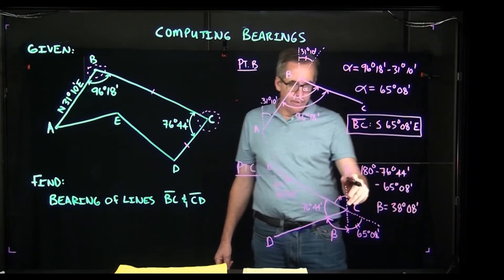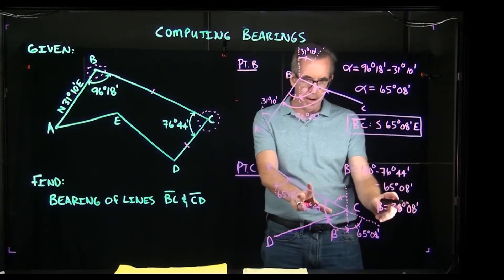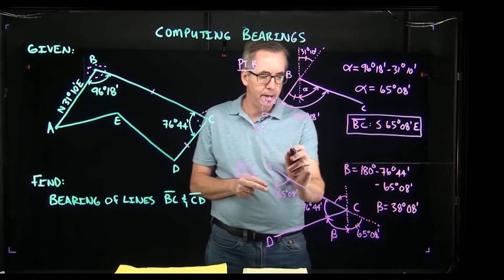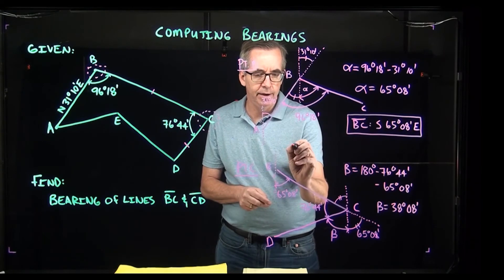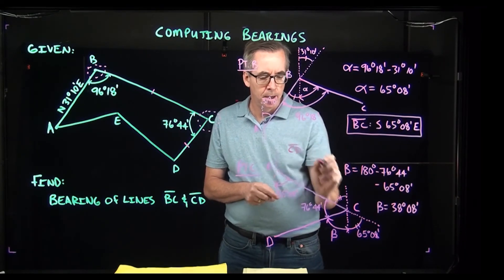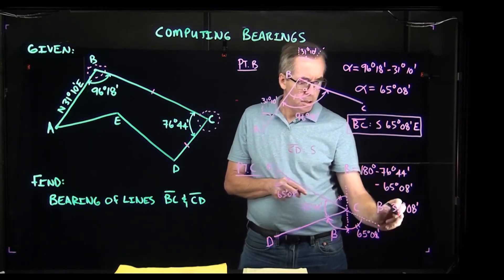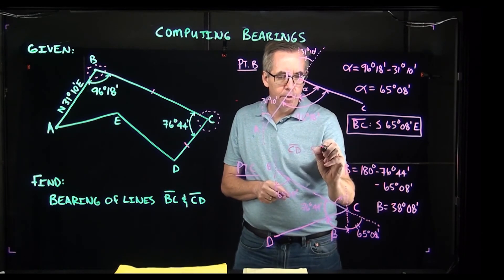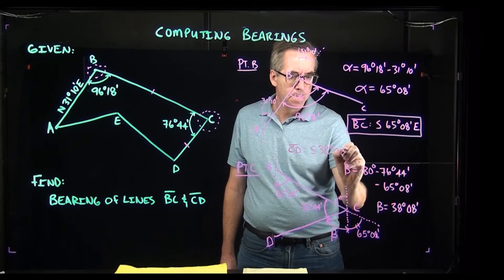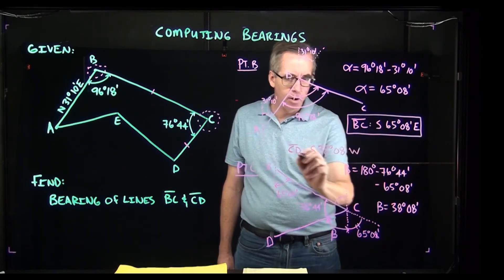If my beta is 38 degrees 08 minutes, now I have to write that in terms of a bearing. Because I'm running a little room, I'm just going to write it up here. My bearing for line CD is going to be south 38 degrees 08 minutes, the angle that we just figured out, and it's going west.